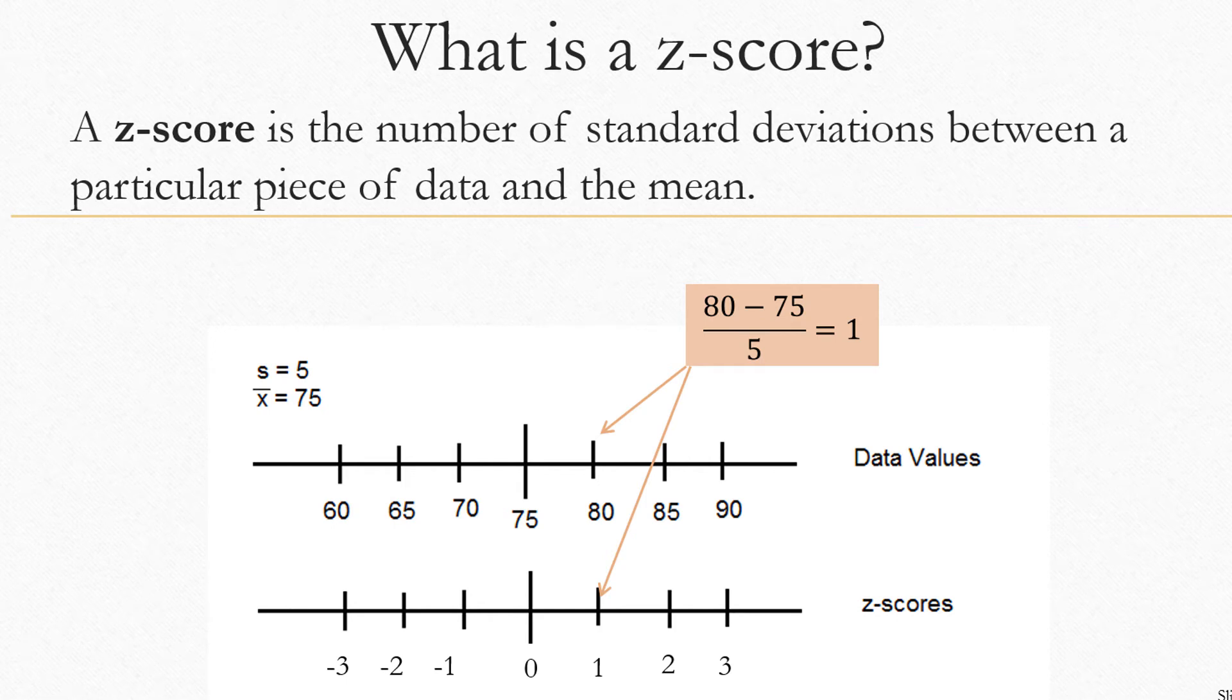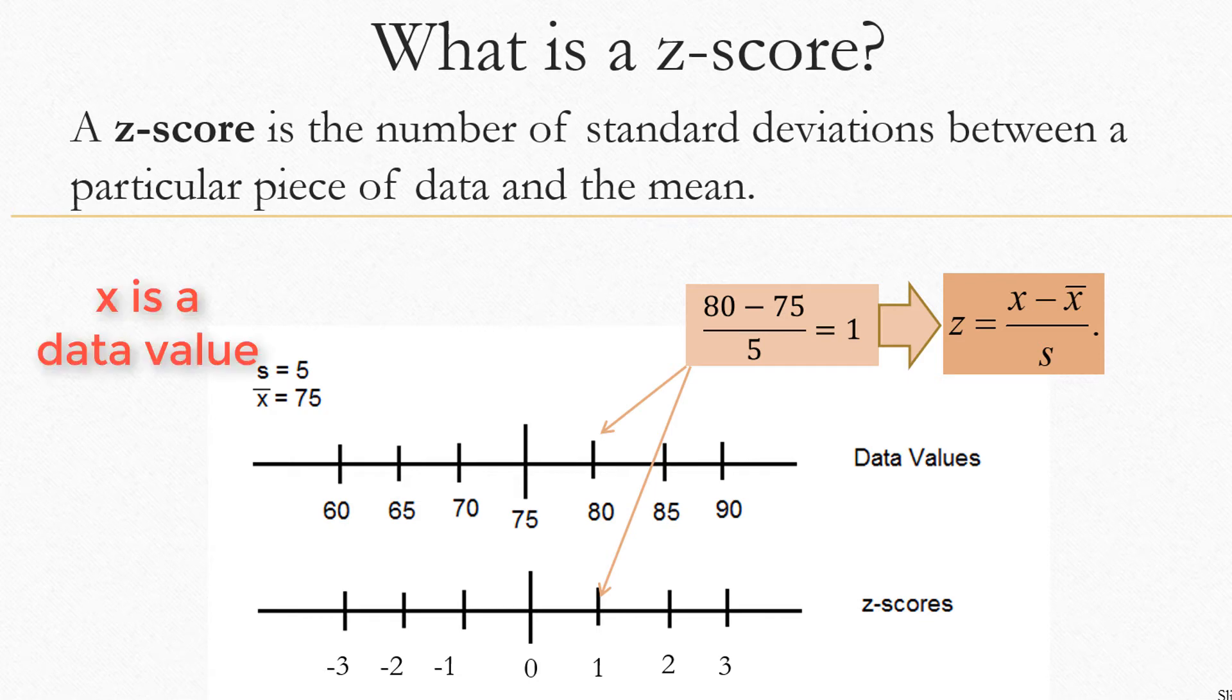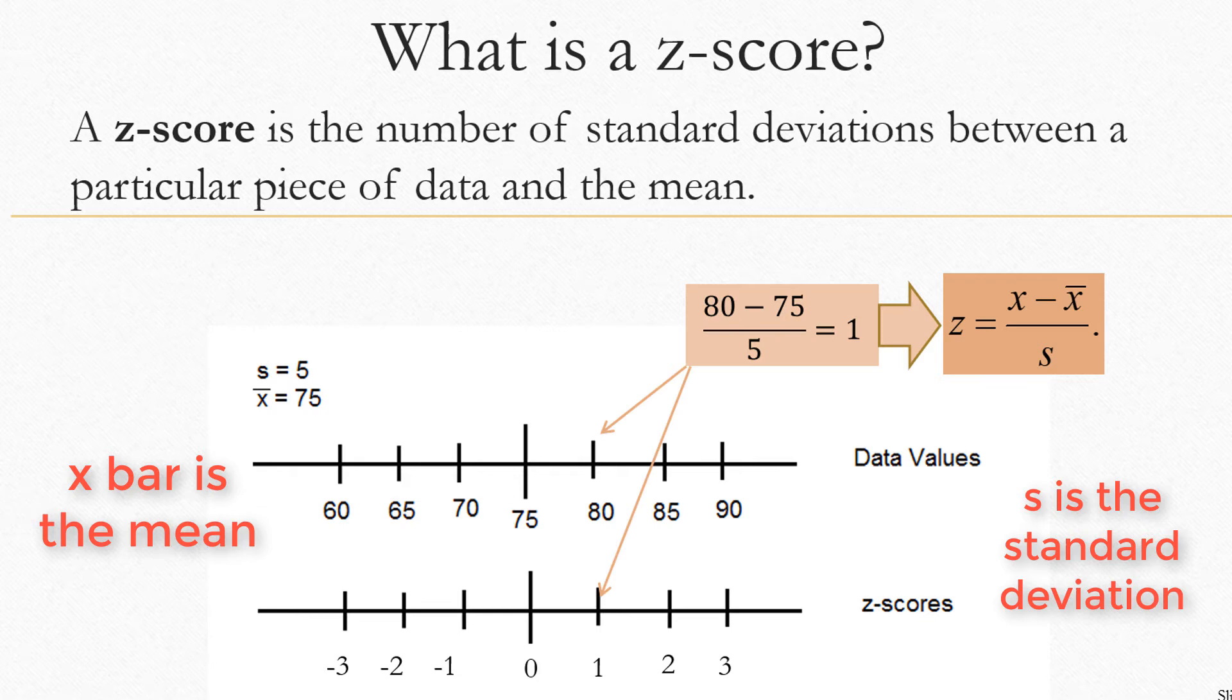One way to get the Z score for any data value is to find the difference between the data value and the mean and divide by the size of a standard deviation. For example, the data value 80 minus the mean 75 is 5, which if you divide by 5 is equal to 1. This corresponds to the formula Z equals X minus X bar over S, where X is the data value, X bar is the mean, and S is the size of a standard deviation.